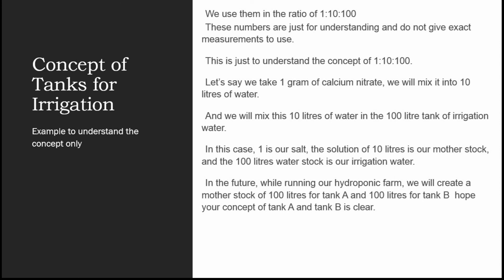The 100 liters of water is the stock in our irrigation water, which is actually used to water your plants in the hydroponic system. While running a hydroponic farm, we will create mother stocks of 100 liters, 200 liters, 500 liters, or 1000 liters for Tank A and Tank B separately — that depends on the size of the farm that you are planning to commercialize.